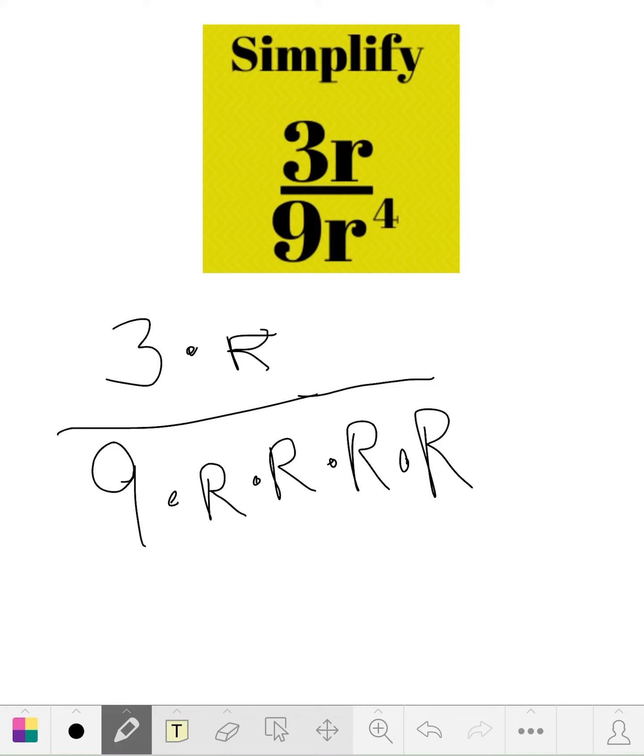So how you can really do this is you just scratch off this R and this R. Now the 3 can be 1 and this can be 3.